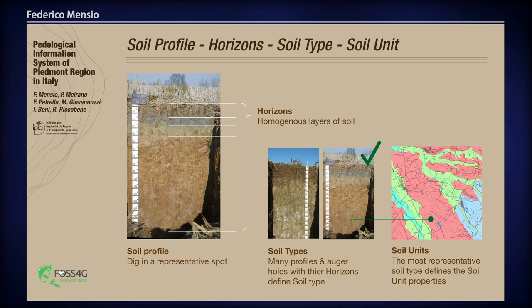How is this data and information obtained? On the field, pedologists go and dig in a representative spot — a soil profile or an auger hole — and they define the horizons. Horizons are homogeneous layers of soil. You can see in the first picture four horizons that are well defined by the color of the soil. Other characteristics of a horizon include the amount and presence of clay, the amount and presence of rocks — called skeleton — and so on. With many profiles or auger holes and the horizons defined by them, pedologists can define the soil type, and the most representative soil type defines the soil unit properties.